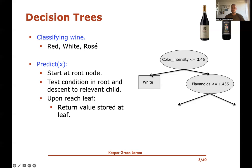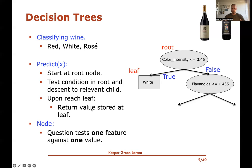The root is the top node; leaves are the square boxes with no further arrows or questions, and they store the predicted label — here, 'white.' Edges to the two children correspond to whether the logical test returns true or false. Every internal node tests one feature against one concrete value, for example color intensity against 3.46.